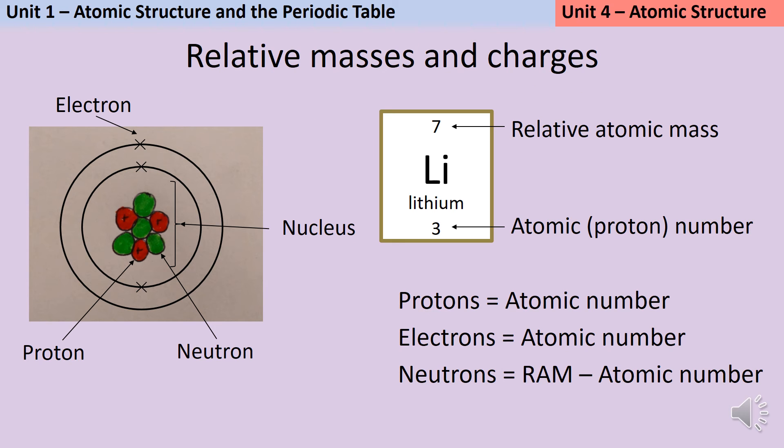Now, what about the different numbers of these subatomic particles? If you look at a periodic table, every element has its own square, and on that square there are two numbers. The larger of the two numbers is the relative atomic mass. How heavy are the atoms of that element compared to other elements? The smaller number is the atomic number, which is sometimes called the proton number. Now, it won't come as a surprise to anyone to know that the atomic number, if it's called the proton number, tells you how many protons that atom has.